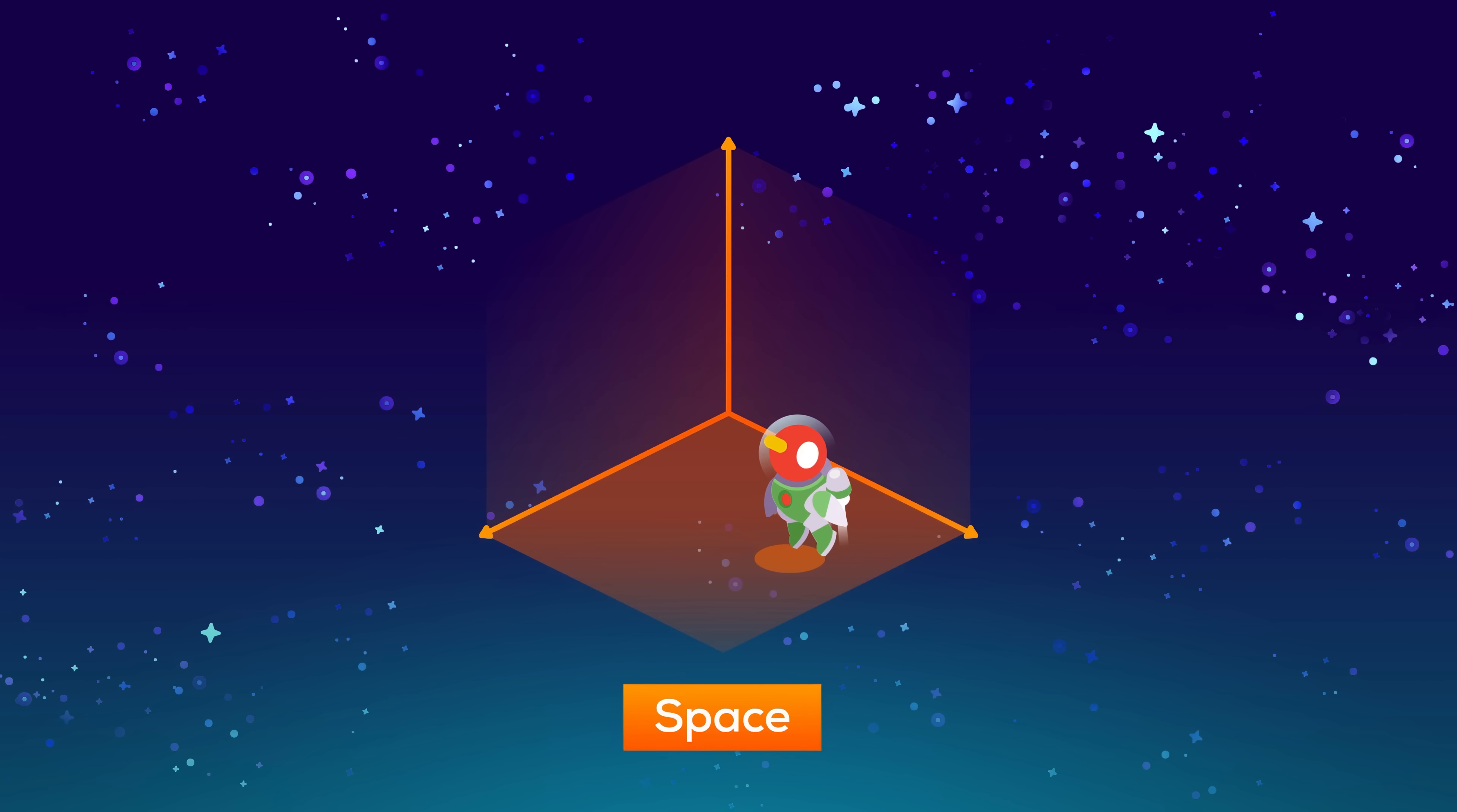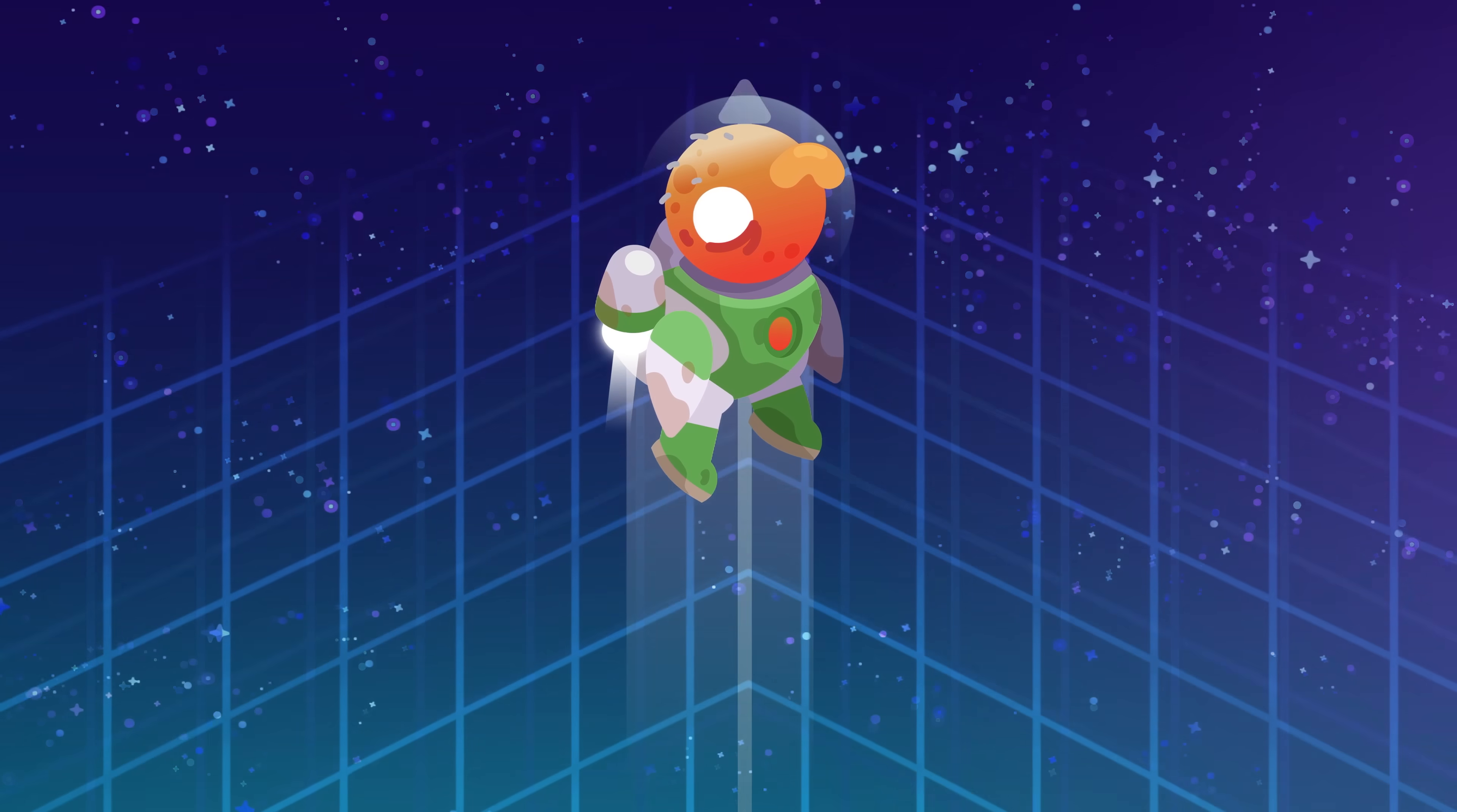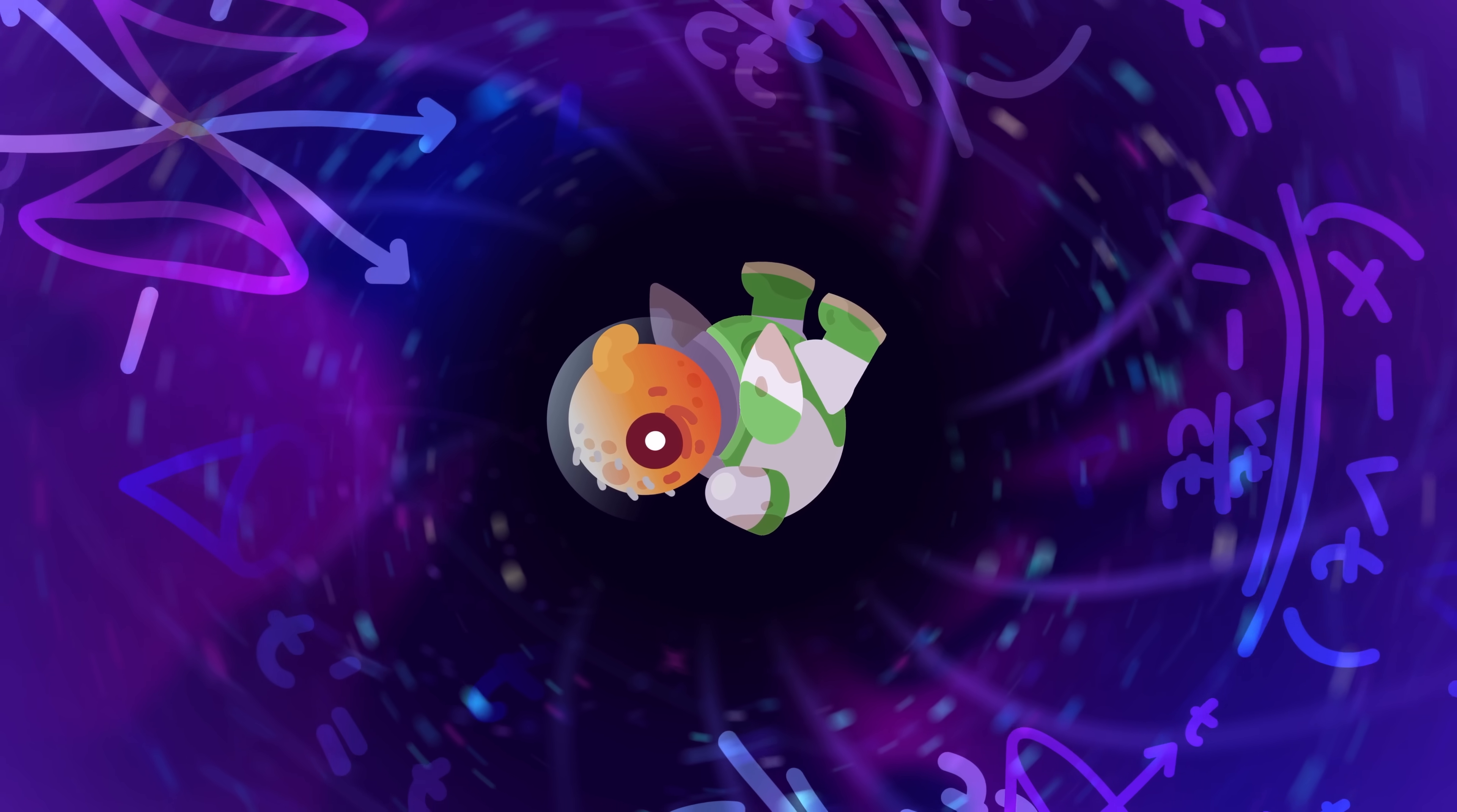While you can go forward-backward, left and right, up and down in the space dimensions, in time you can only go forward. You only get older, never younger. You can't make detours. But this is an illusion. You have far more control over how you move through time.